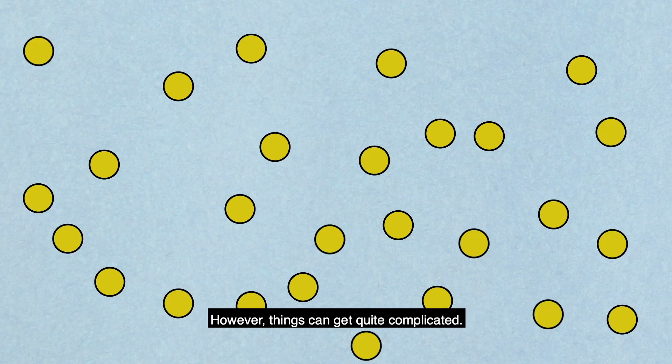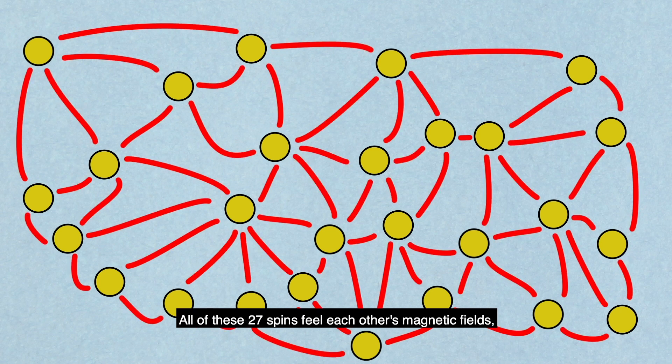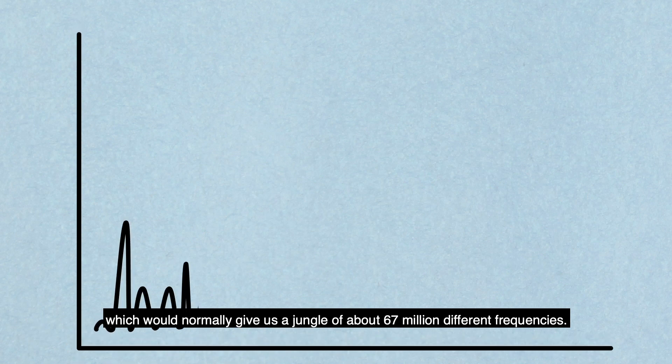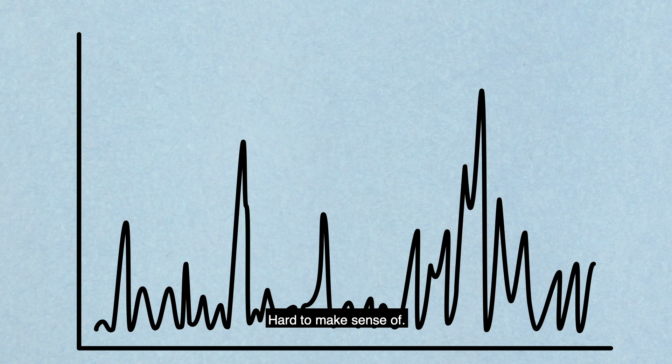However, things can get quite complicated. All of these 27 spins feel each other's magnetic fields, which would normally give us a jungle of about 67 million different frequencies, hard to make sense of.